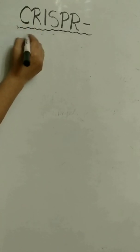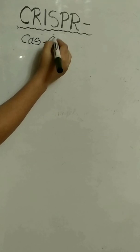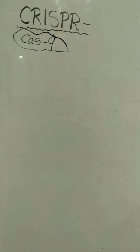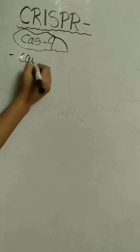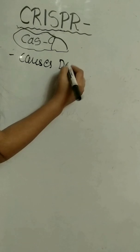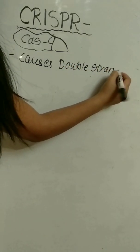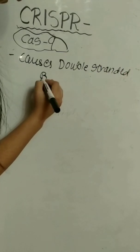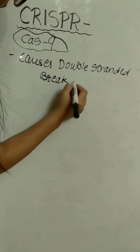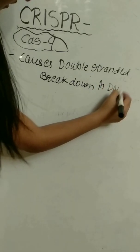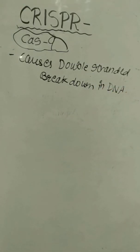This is a Cas9 system. This technique is used in molecular biology. It causes double-stranded breaks in DNA. It works like scissors.